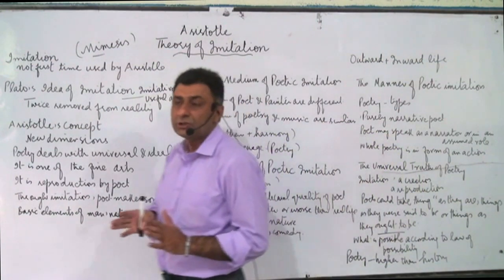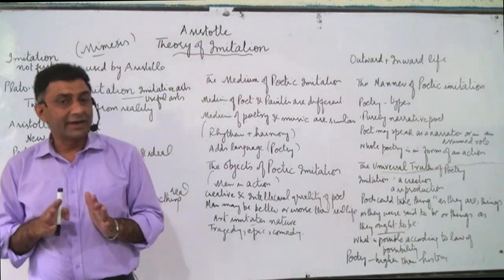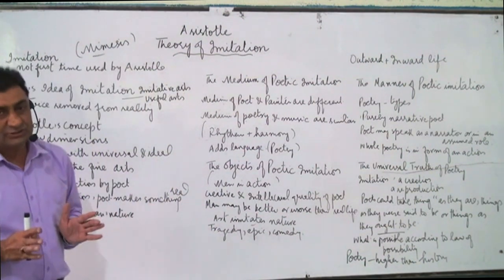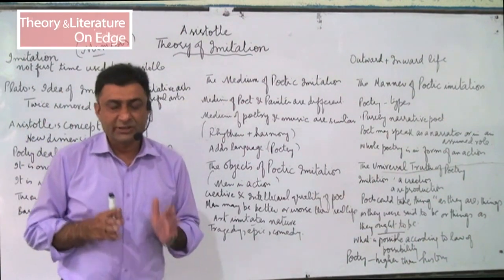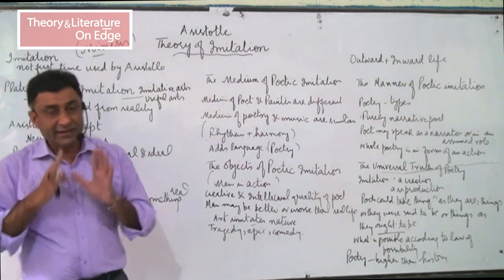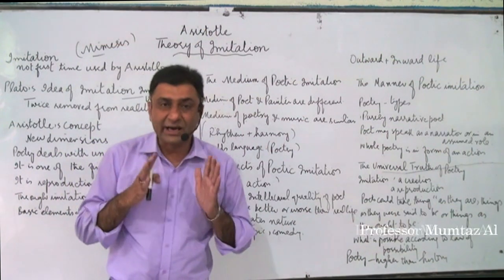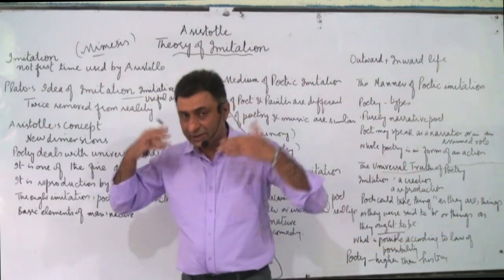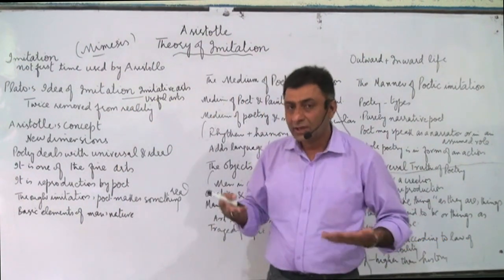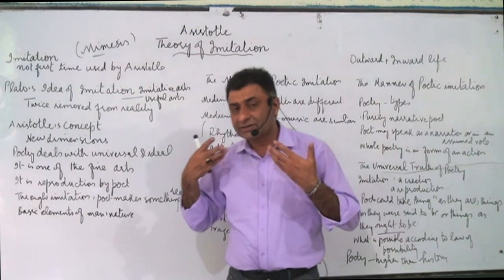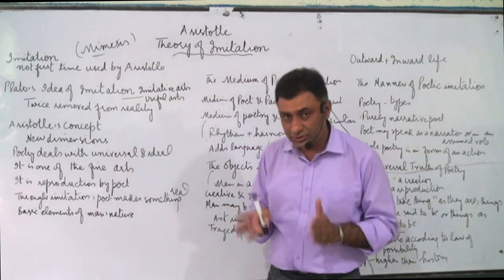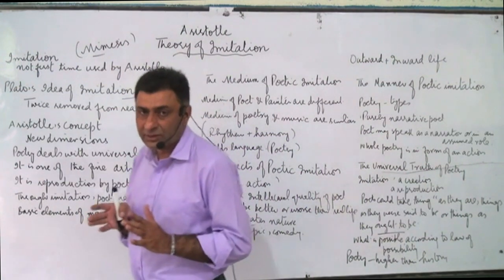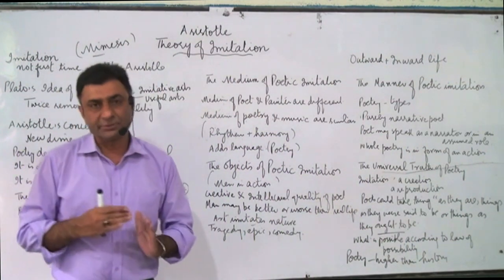When Plato talks about truth, idea, or reality, he says that truth and ideal form lie somewhere else — with God. That ideal reality, ideal truth, and ideal knowledge lie with God. This universe which we are observing with our eyes is just a copy of that real, ideal reality.